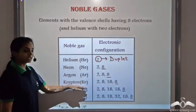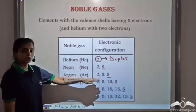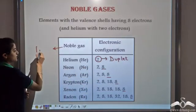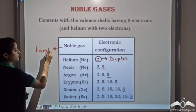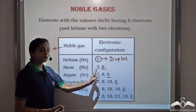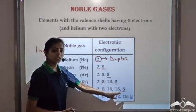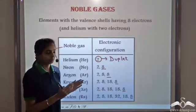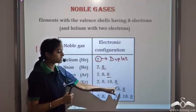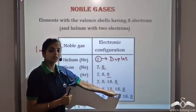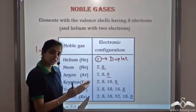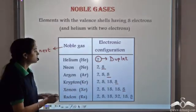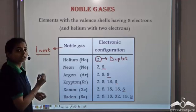The noble gases have 8 electrons in the valence shell. These are also known as inert gases. Because whenever any atom has 8 electrons in the valence shell, that is the most stable arrangement for that atom. So all these noble gases have 8 electrons in the valence shell — that is, they have the most stable configuration — so they do not participate in chemical reactions. And that is why they are known as inert gases.